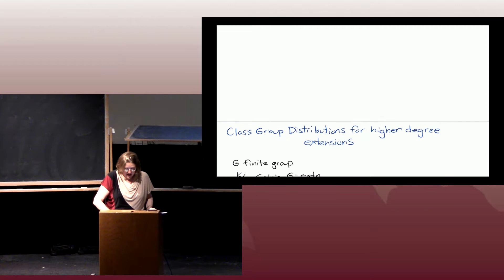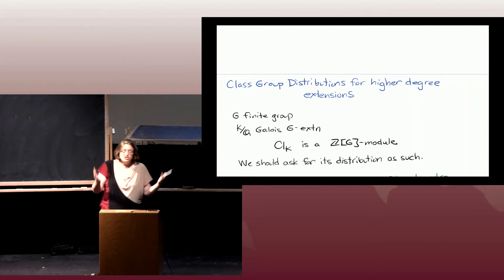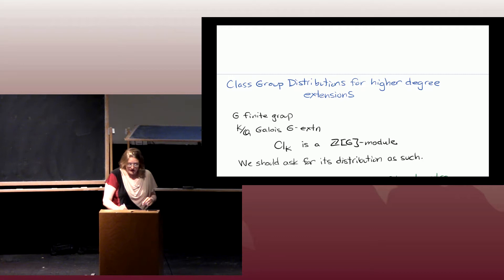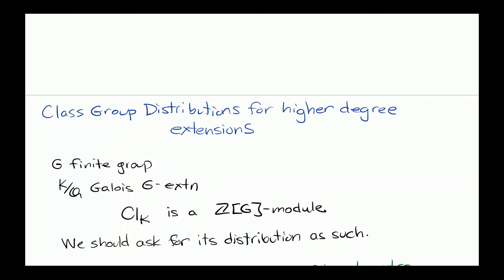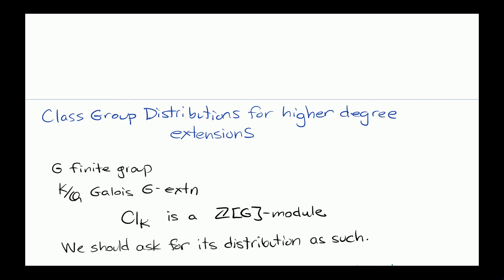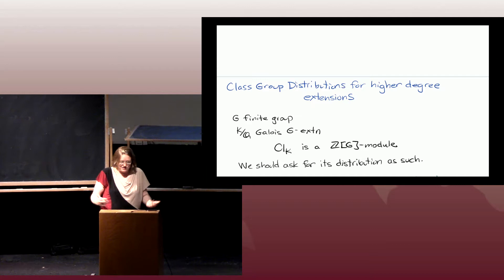Today I'm going to talk about conjectures for class group distributions for higher degree extensions. We're going to let G be a finite group and take K over Q a Galois G extension, and ask about the distribution of the class groups of K as K varies over G extensions. One thing that happens here is that these class groups of G extensions are not just finite abelian groups — they have an action of G because the Galois group of K over Q acts on the class group. So they are modules for the group ring Z[G], and since these class groups are ZG modules, we should ask for their distribution as ZG modules, not just as abelian groups.